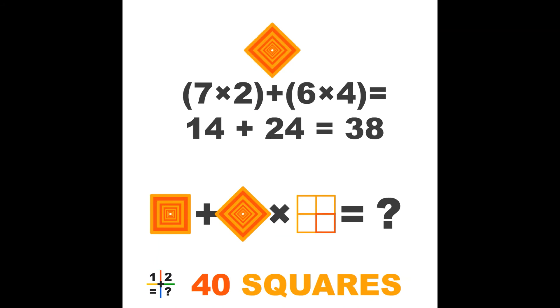The second object in the last line works the same. 7 times 2 plus 6 times 4 equals 14 plus 24 equals 38. Now we have the value of the first two objects of the last line.